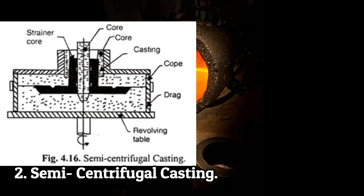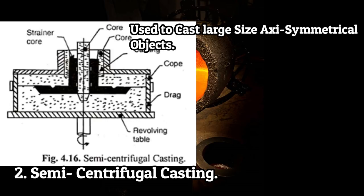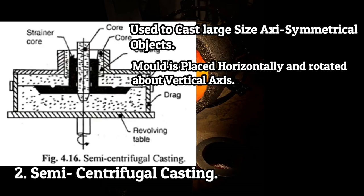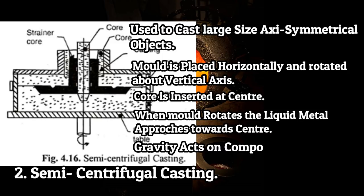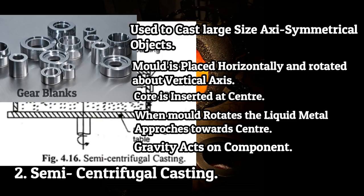The next type is semi-centrifugal casting. This process is used to cast large size axisymmetrical objects. The mold is placed horizontally and rotated along the vertical axis. A core is inserted at the center to cast hollow sections. When the mold rotates, the outer portion fills by purely centrifugal action, but as the liquid metal approaches the center, the centrifugal component decreases and the gravity component increases. Thus a core is inserted at the center to make the hollow cavity without centrifugal force. This process is used for uniform filling of axisymmetrical parts such as gear blanks and flywheels.